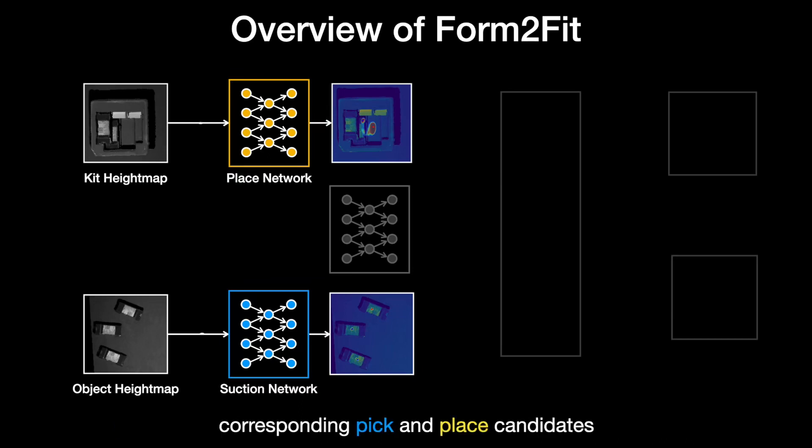Now that Form2Fit has generated a set of picking and placing locations, it still needs two more pieces of information to carry out an assembly action. First, it needs a way of associating each suction location on the object to a corresponding placing location in the kit. And second, once it picks a pick-and-place candidate pair, it needs to infer the rotation angle it needs to apply to the selected object before placing it in the kit.